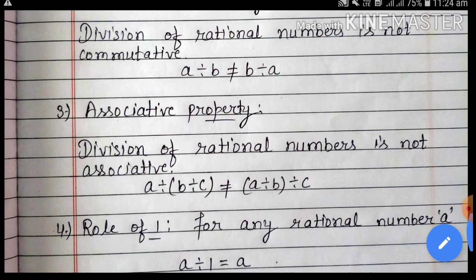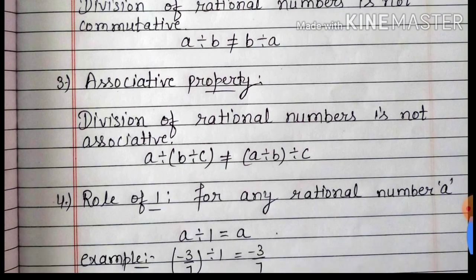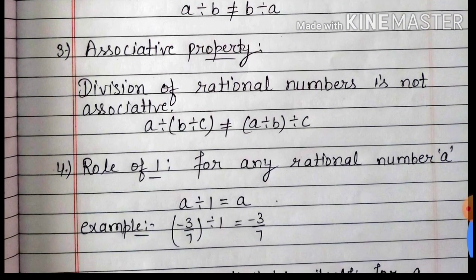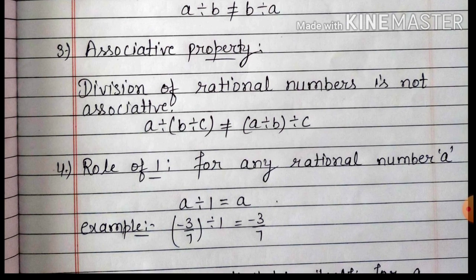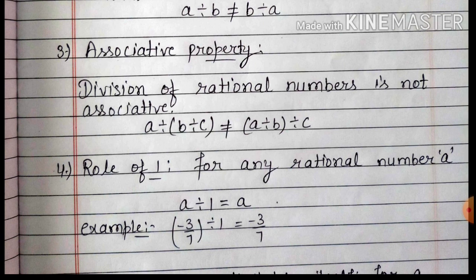Associative property देखेंगे. Division of rational numbers is not associative. अगर A, B, C तीन rational numbers लें, तो A divide (B divide C) not equals to (A divide B) divide C. तो associative property भी hold नहीं करेगी division के case में.